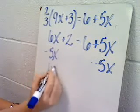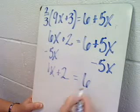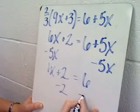6x minus 5x is 1x. And I'm going to bring down the plus 2 and the 6. Then I'm going to subtract 2 from both sides.